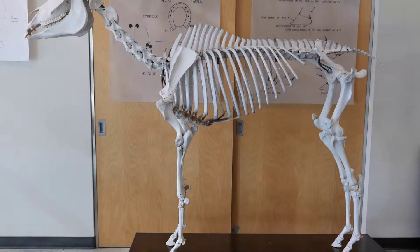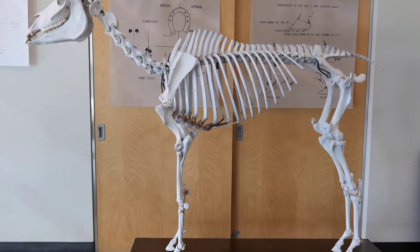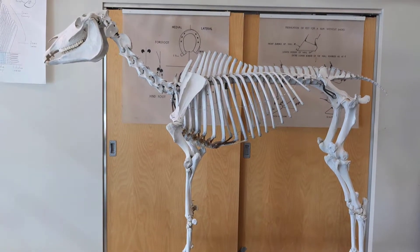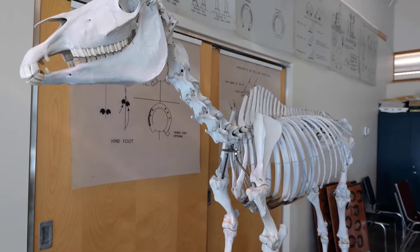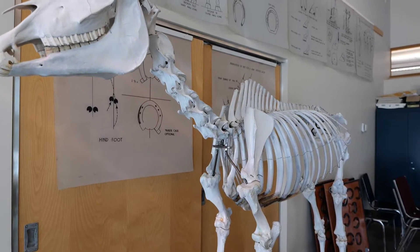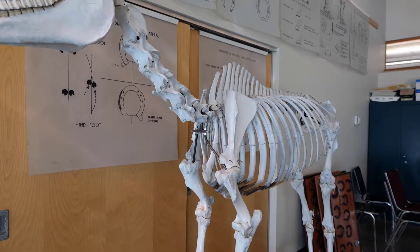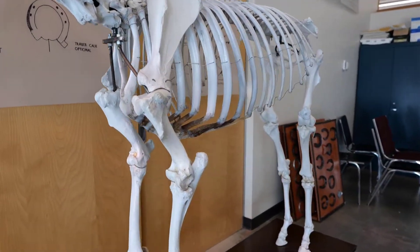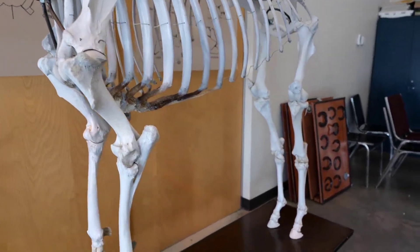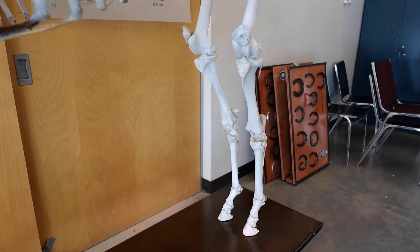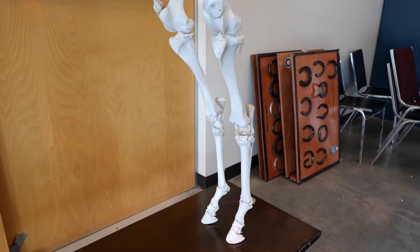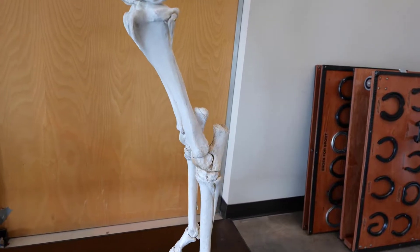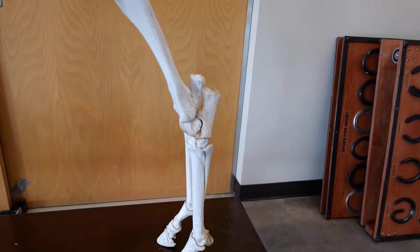In this video we want to look at the bones of the horse's hock. The hock of the hind limb compares to our ankle, and the point of the hock is our heel.